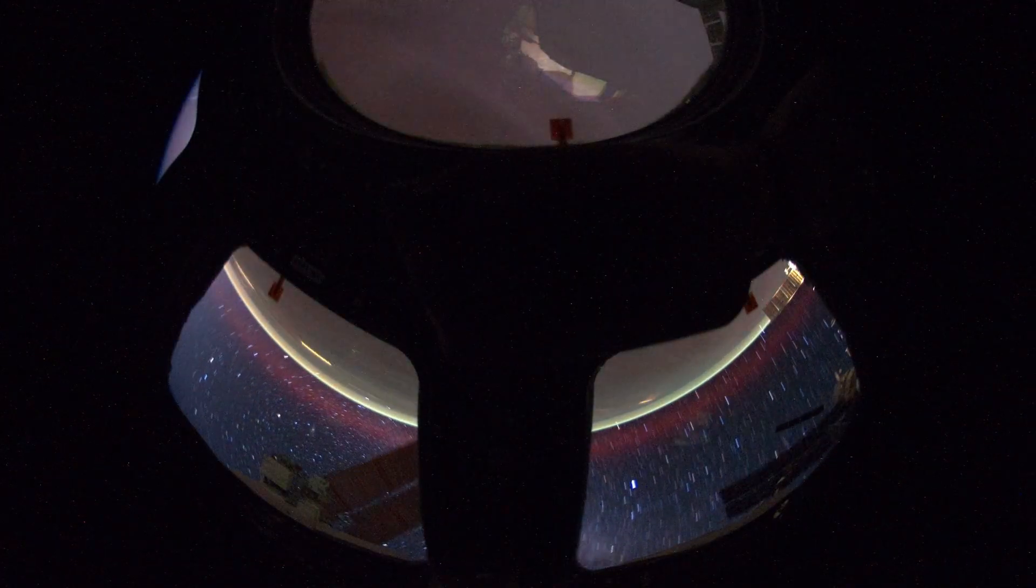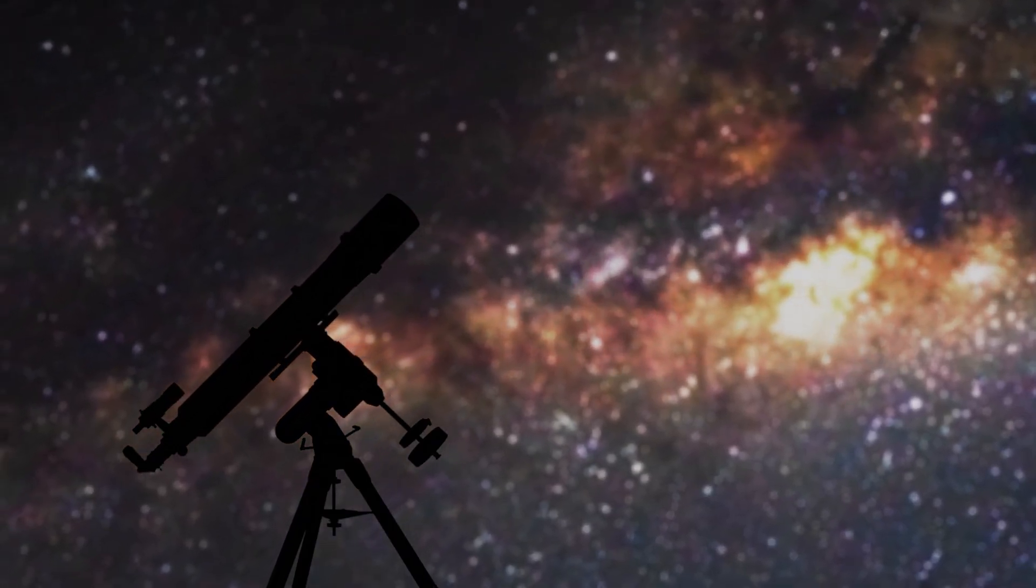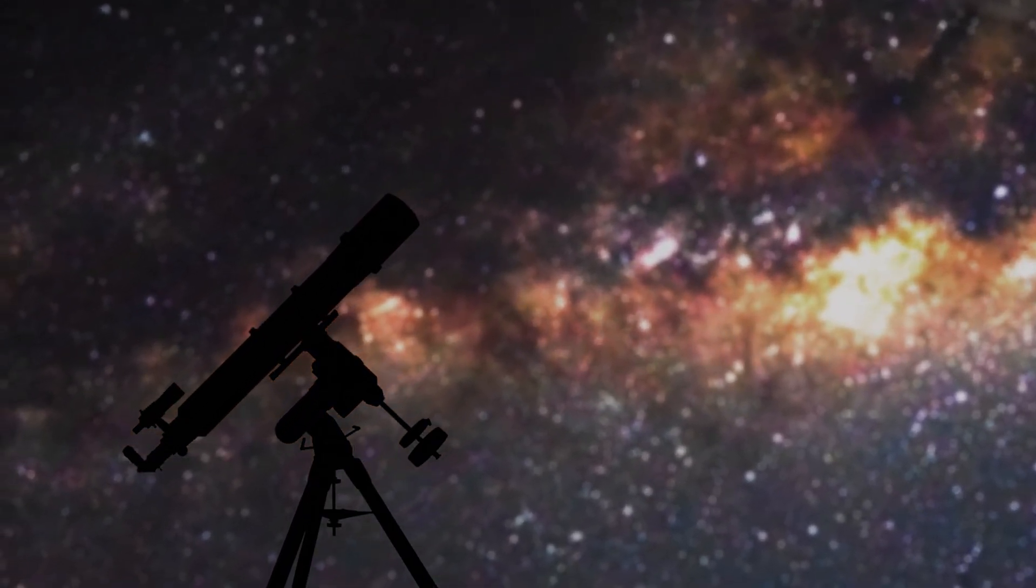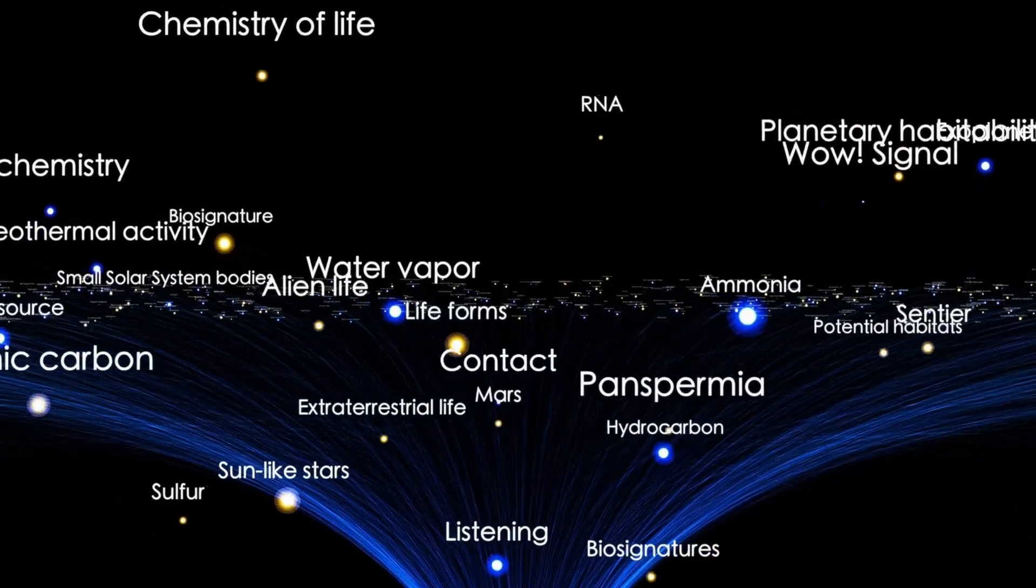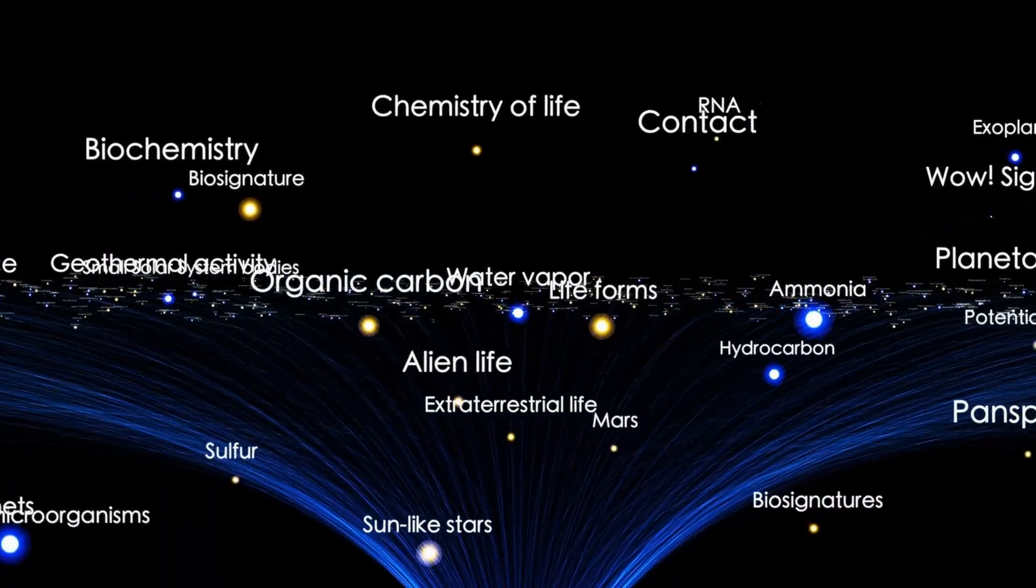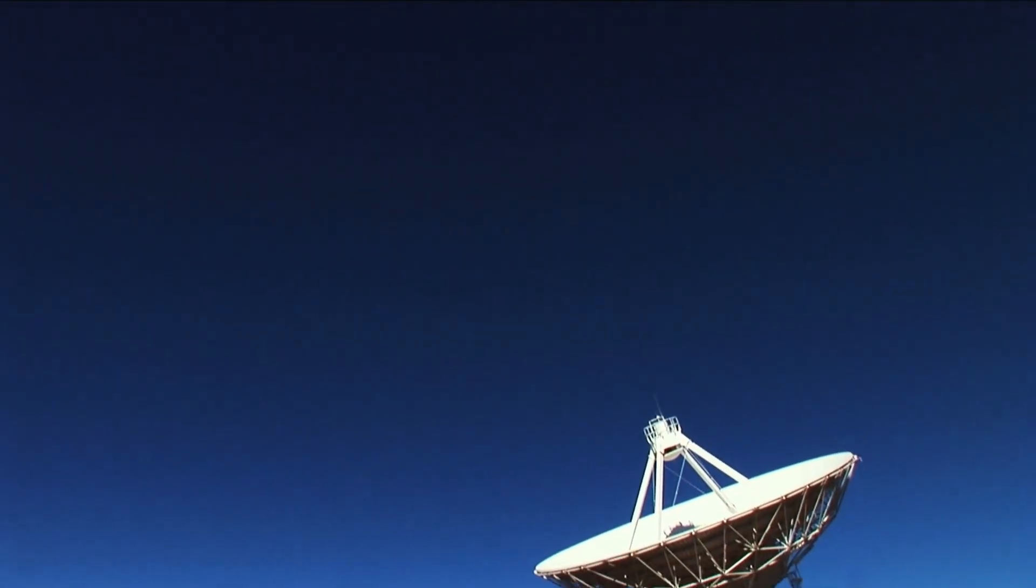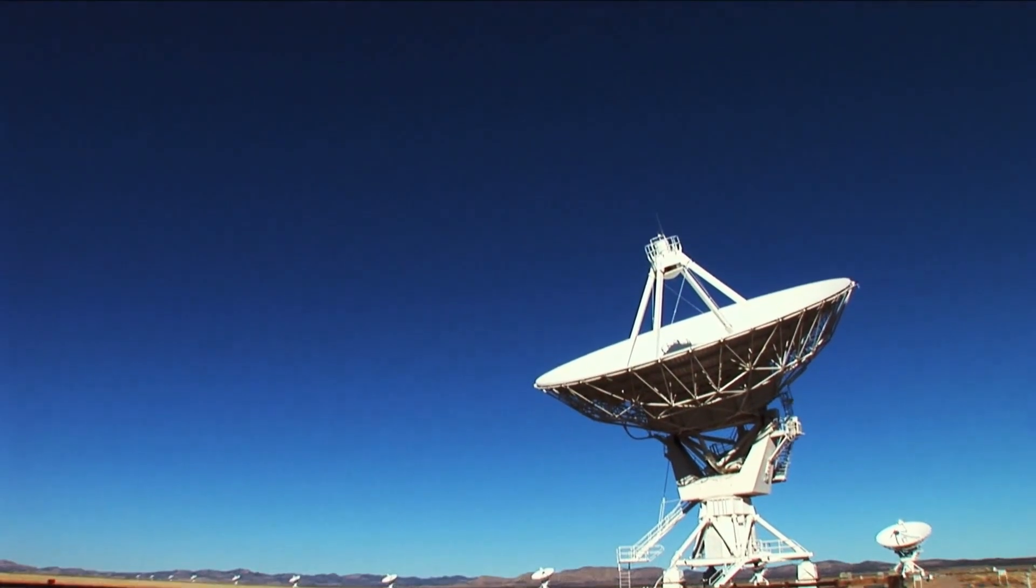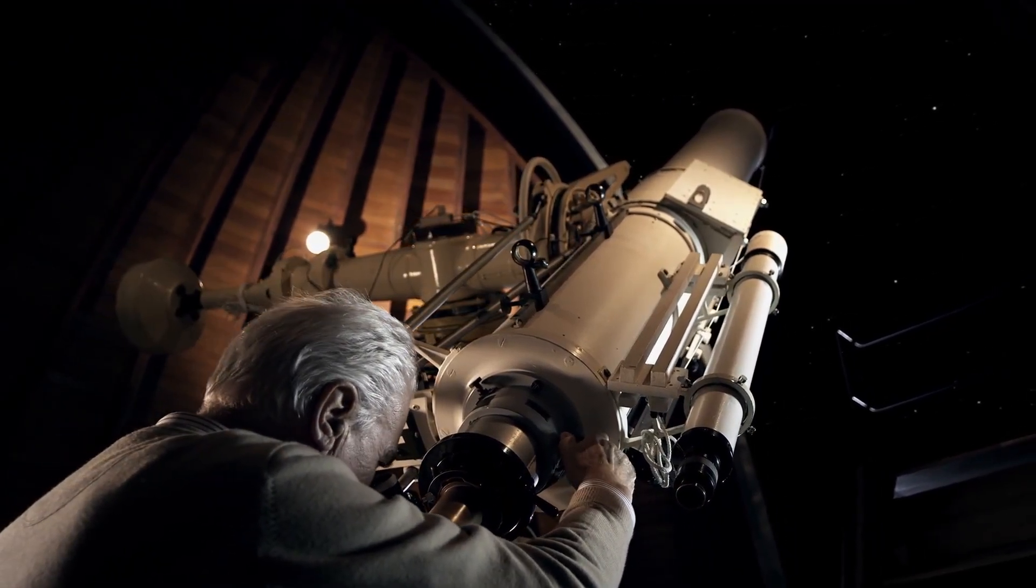Then something happened much closer to home. Monitors at the South Atlantic Anomaly, Earth's weakest magnetic region, began detecting ripples. Not solar flares, not gamma bursts, but localized electromagnetic pulses, timed with Atlas's trajectory adjustments. As the object passed through the outer heliosphere, our planet reacted.